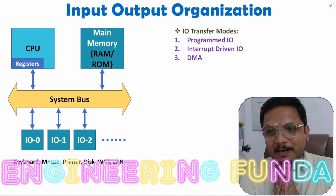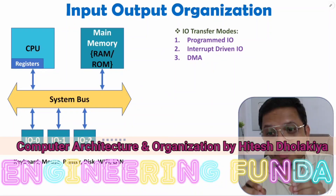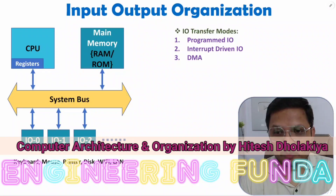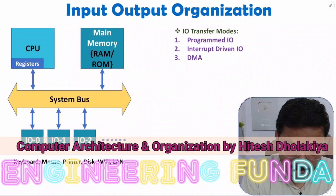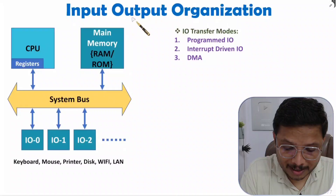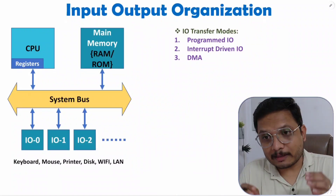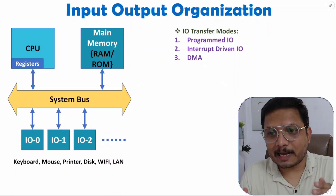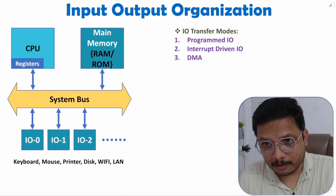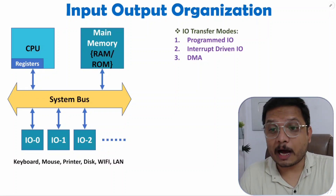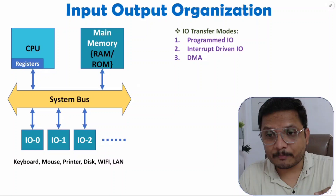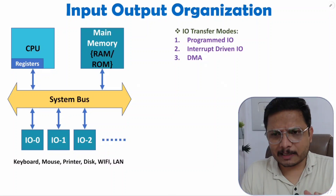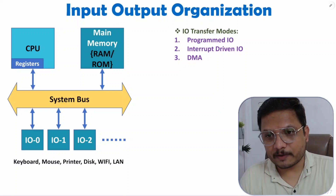Hello friends, welcome to Engineering Funda. From this video onwards, I'll be starting with the last chapter of COA. This chapter is all about input-output organization. In this video, I'll explain how many things I'll be covering in this chapter, as well as the issues with interfacing of IO devices with CPU. Let us see the architecture of interfacing first.